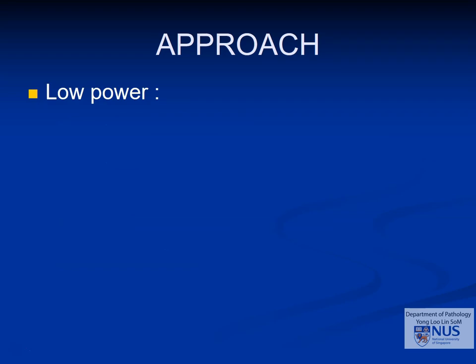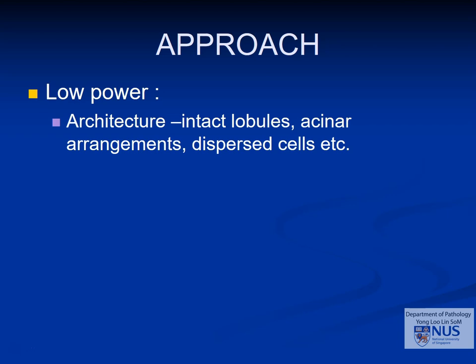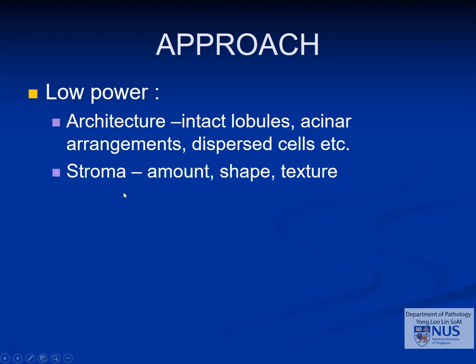In the microscopic approach, we always start at low magnification and look at architecture. You may see intact lobules of normal salivary gland tissue. Also look for specific arrangements such as acinar structures seen in some tumors — for example, acinic cell carcinoma — and dispersed cells. One very important element is the stroma: look at the amount, the shape — for example, in adenoid cystic carcinoma you often see rounded globules of stroma — and the texture. In pleomorphic adenoma, there is often a very fibrillary texture.